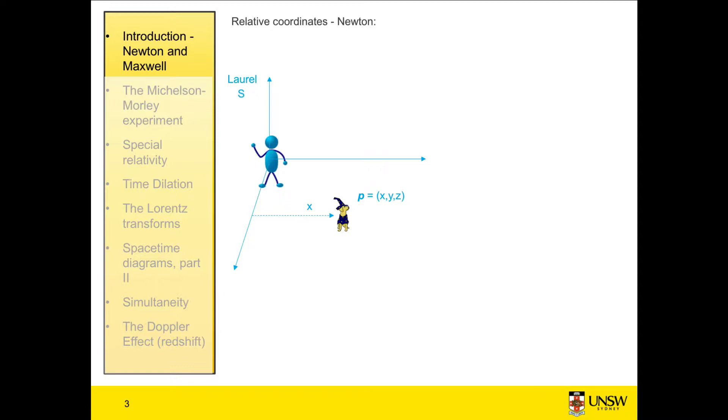So then in his coordinate system, the dog is at some point P, which is equal to x, y, and z, and the time coordinate T. We're going to keep this nice and simple, so we're only going to be looking in one direction. For this entire topic, for all the videos in this topic, I'm only going to be looking in the x direction. So in that case, our dog is the distance x from our stationary Laurel.